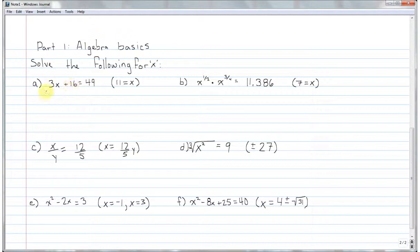So for the first one, this is basically the most basic algebra you'll see. We have 3x plus 16 minus 16 equals 49 minus 16, 3x. These 16s are going to cancel out. We'll just subtract the 16 from 49. That gives us 33. And then we'll divide both sides by 3. And we'll wind up with x equals 11.